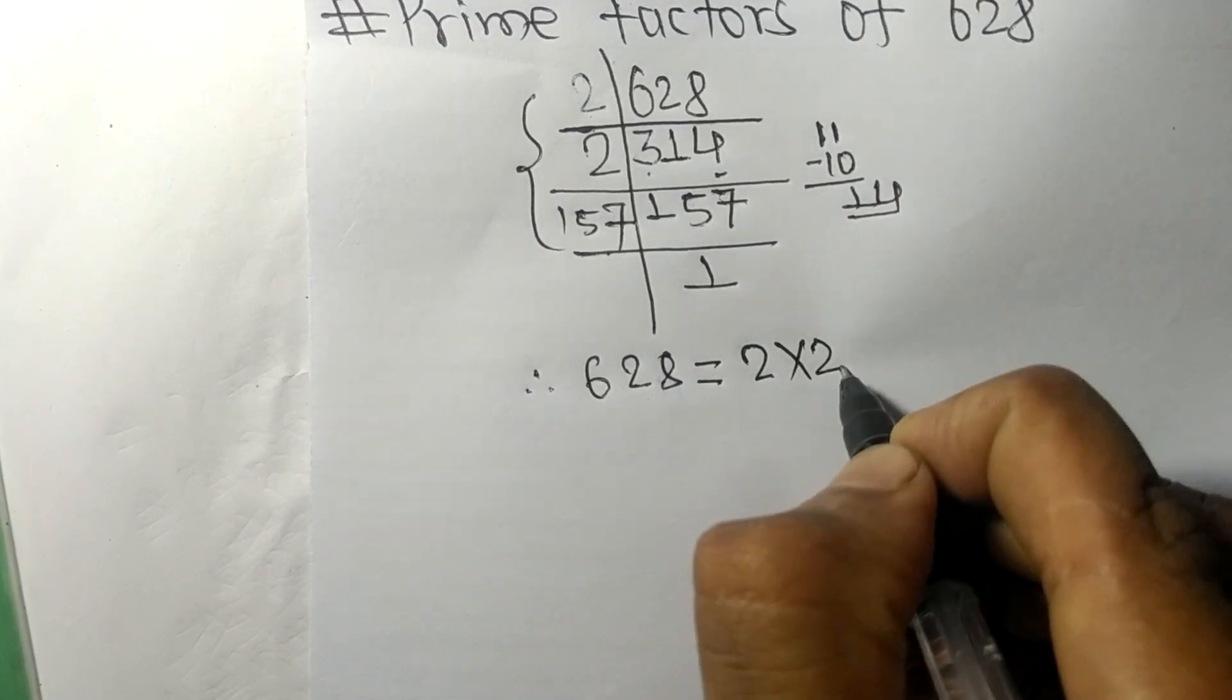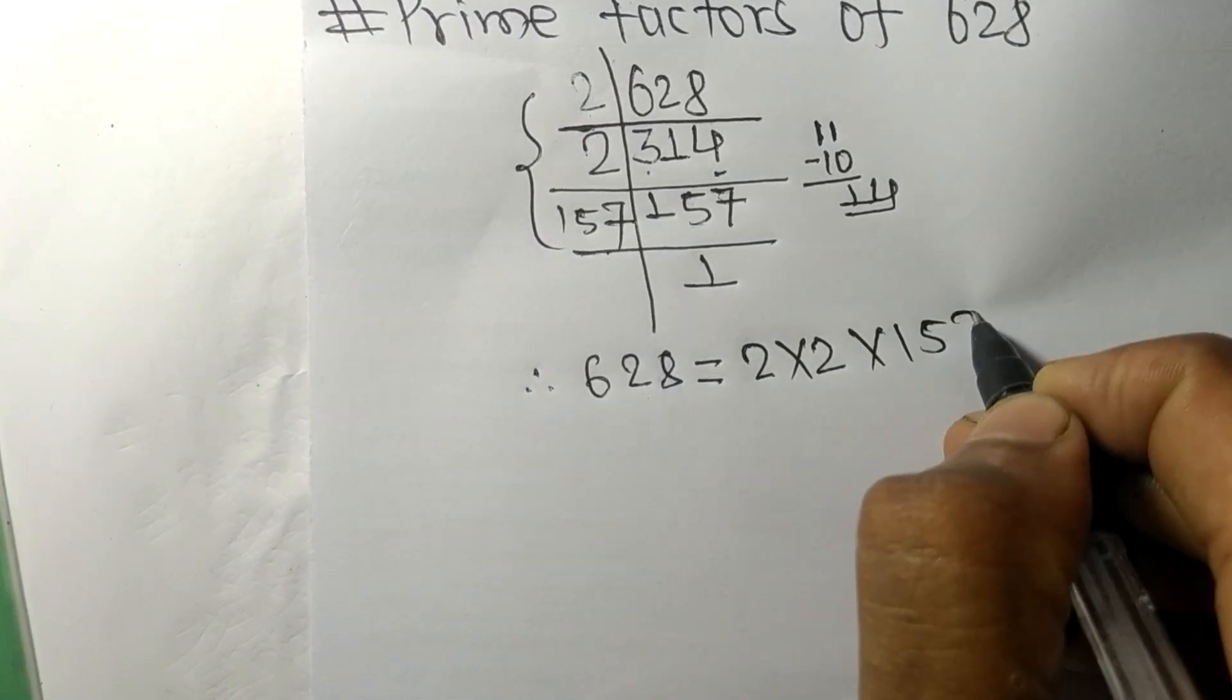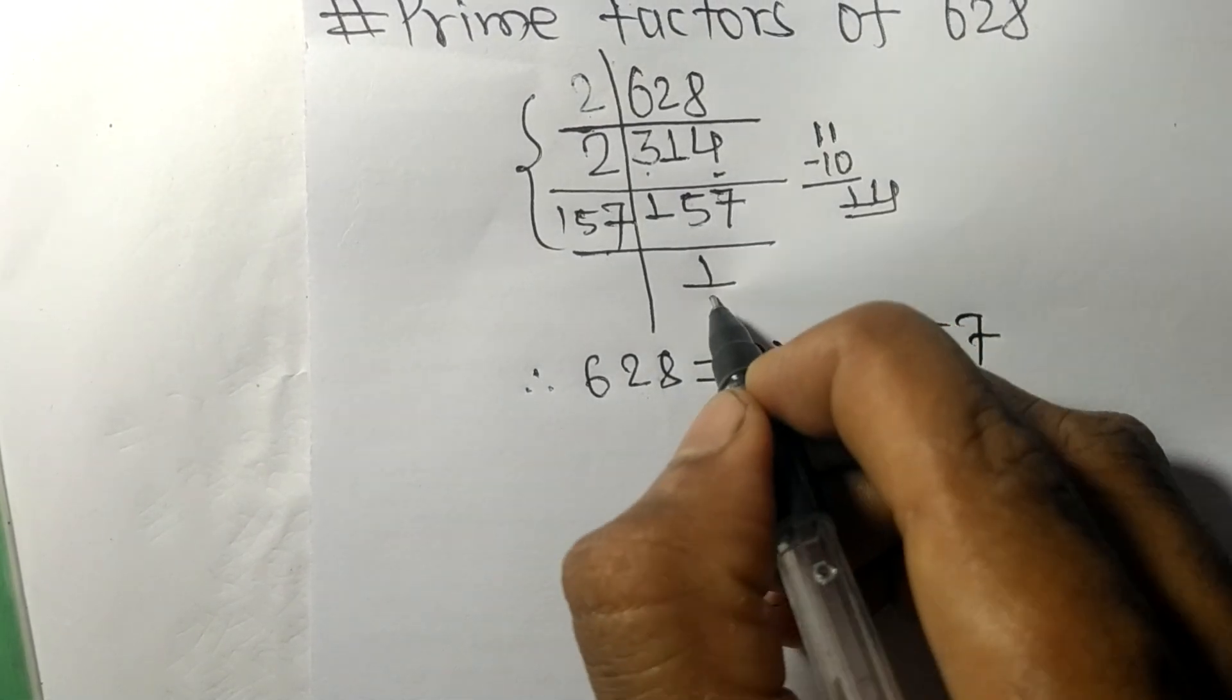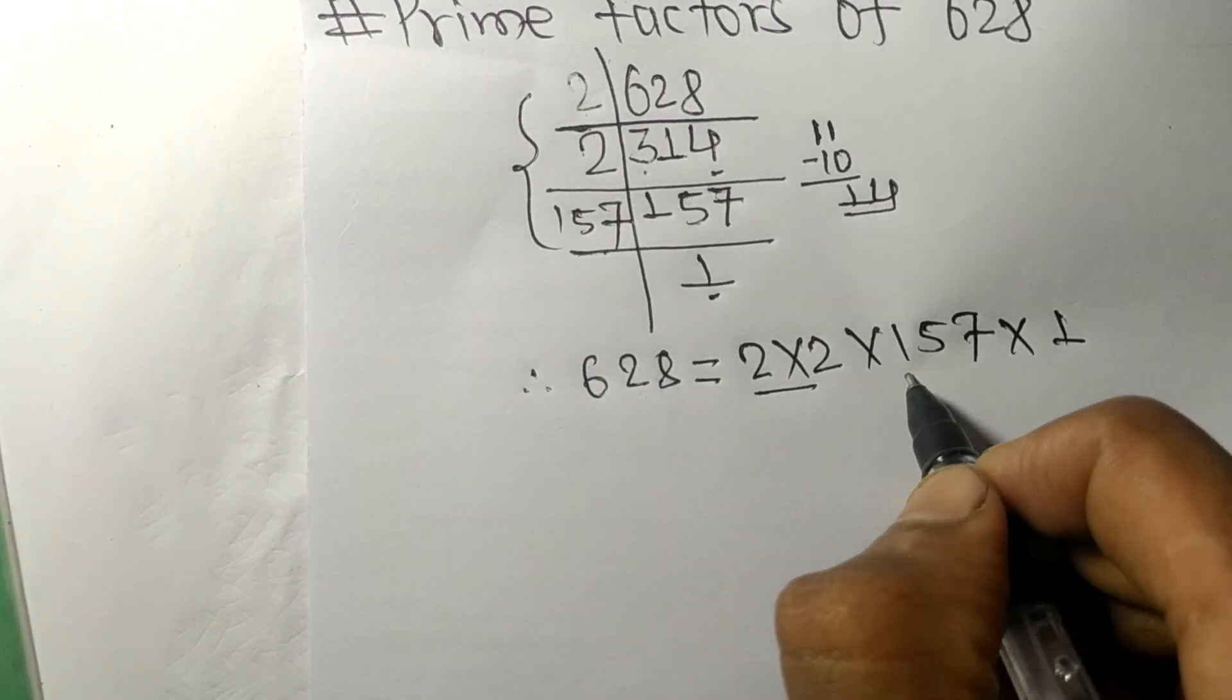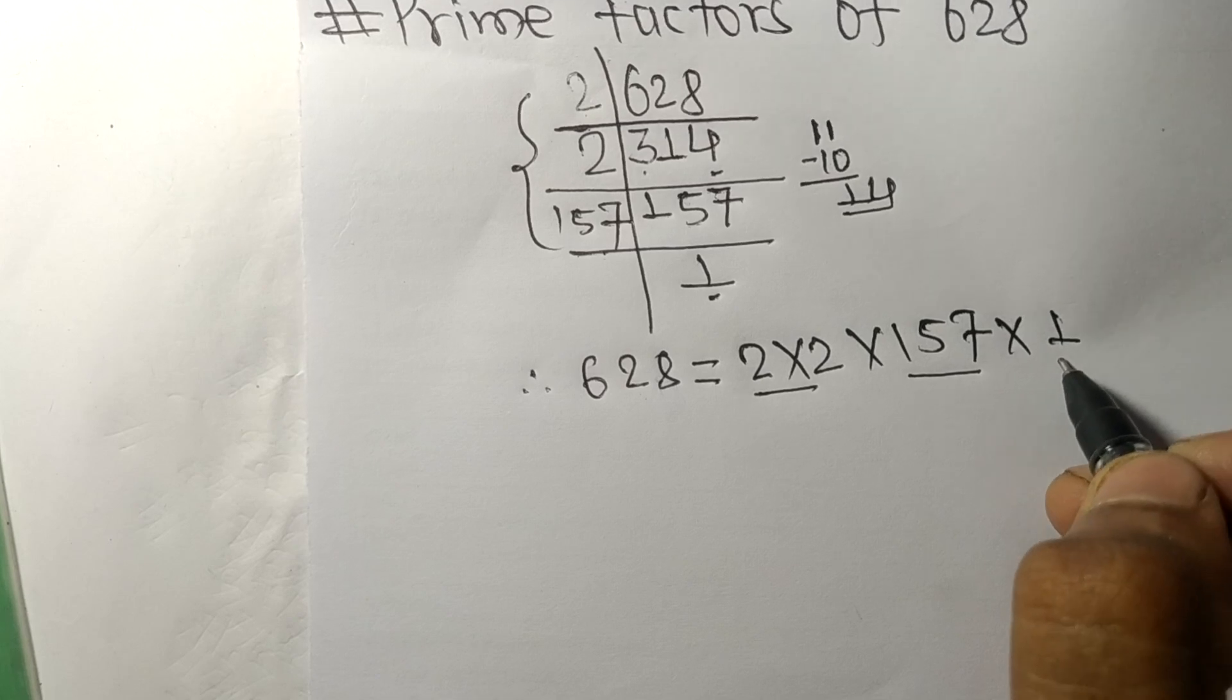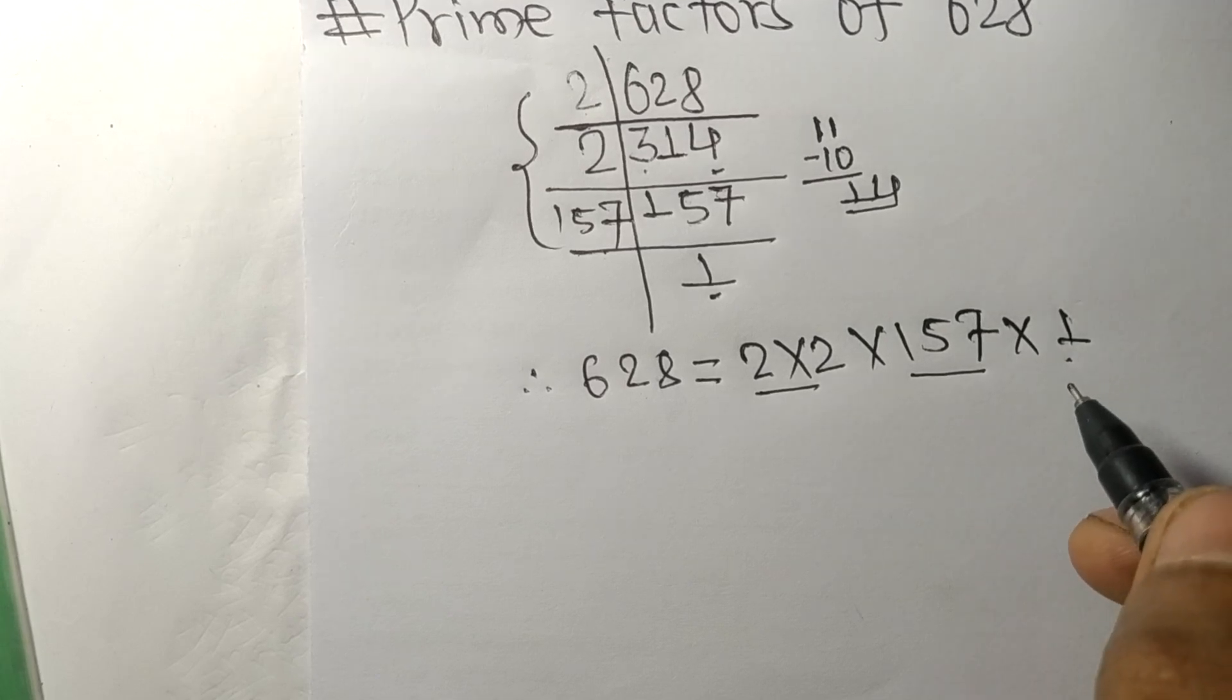2 times 2 times 157, and from here it is 1. So 2, 2, 157, and 1 are the prime factors of 628.